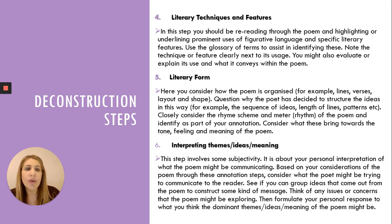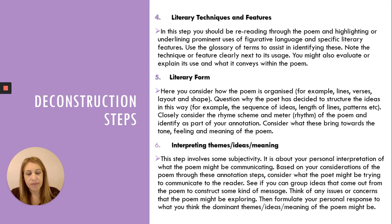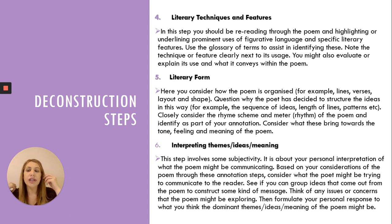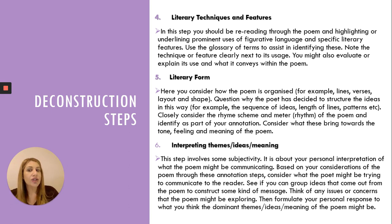Literary form: how is the poem organised? Is it lines, verses? Is there a particular relevance to the shape or layout? Why has the poet decided to structure the ideas this way? Consider the sequence of ideas, length of lines, and any patterns. Consider the rhyme and metre or rhythm and identify these as part of your annotation. When you're looking at modernist poetry, there is some rhythm and some rhyme, but it's not consistent — there's no rule. It's actually breaking rules, sometimes to highlight a disconnection, create fragmentation, or create stream of consciousness.